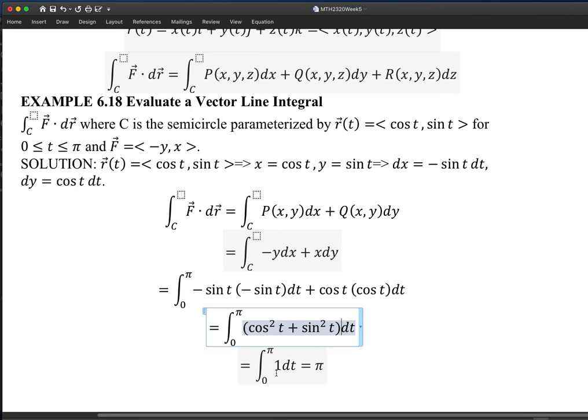This is a single integral in terms of t derived from the line integral. It turns out to be the situation where we have cosine squared plus sine squared, which is just one for any t. So the integral is the integral of one with respect to t, which is t. Then you plug in the upper bound, plug in the lower bound, do a subtraction—that's π.